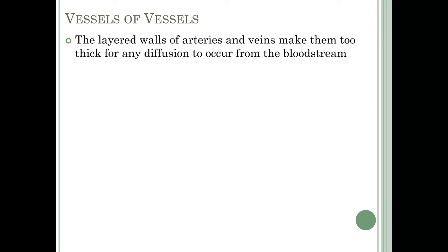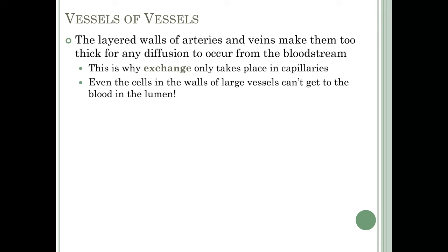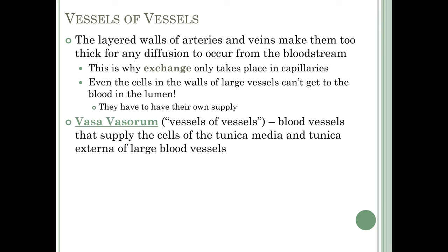The layered walls of arteries and veins make them too thick for any diffusion to occur from the bloodstream out into body tissues — this is why exchange only takes place in capillaries. Even the smooth muscle cells in the walls of large vessels can't access the blood in the lumen. So blood vessels have to have their own blood supply, called the vasa vasorum, which in Latin means 'vessels of vessels.'